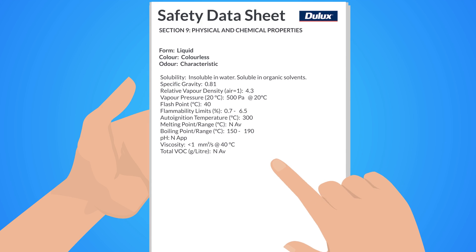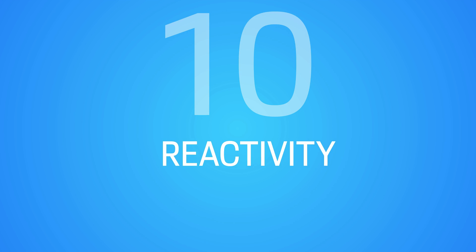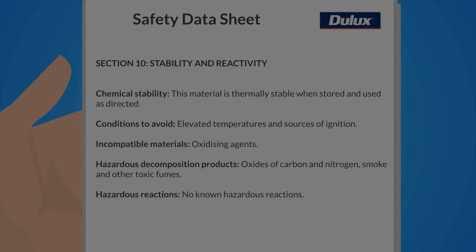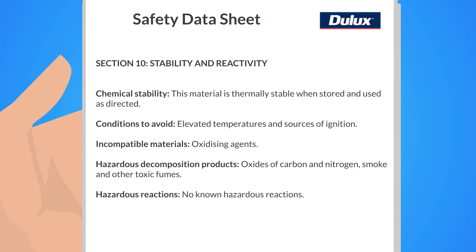Section 9 provides information on the physical and chemical properties, such as appearance, odor, pH, and flashpoint. Section 10 contains critical details of any hazardous reactions that may occur if the chemical is exposed to certain conditions or comes in contact with incompatible materials.